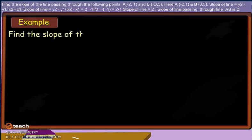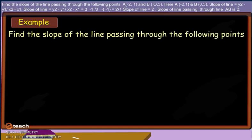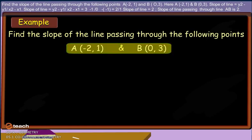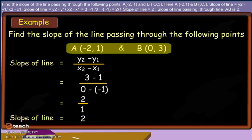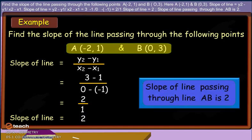Find the slope of the line passing through: Point A(−2, 1) and Point B(0, 3). Slope of line = (y2 − y1) / (x2 − x1) = (3 − 1) / (0 − (−1)) = 2 / 1. Slope of line equals 2. The slope of the line passing through AB is 2.